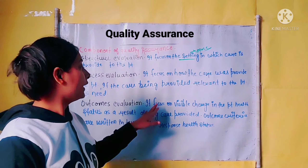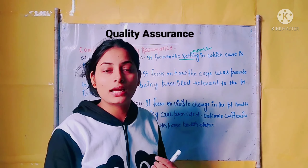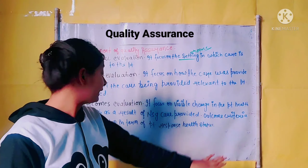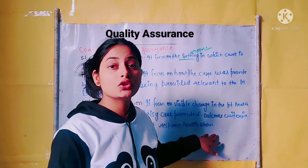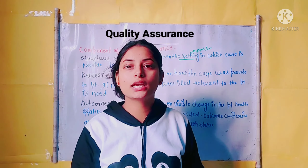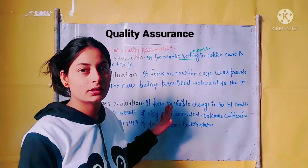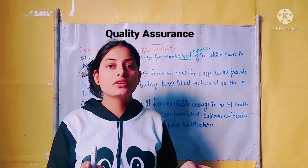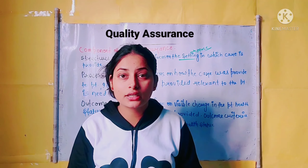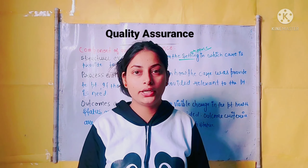Next is outcomes evaluation. It focuses on visible changes in patient health status as a result of nursing care provided. Outcome criteria are written in terms of patient response and health status. We evaluate whether the patient's condition is correct and maintain it in written form. When the patient was admitted and as days increase, we evaluate the patient's health status — that is outcome evaluation. These are all the components of quality care for patients.